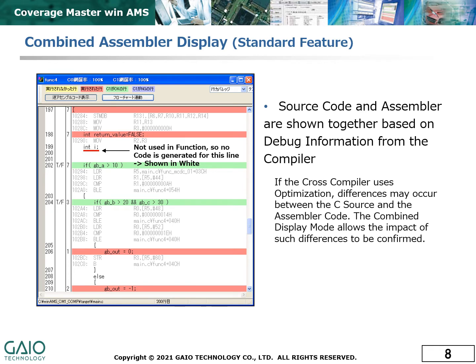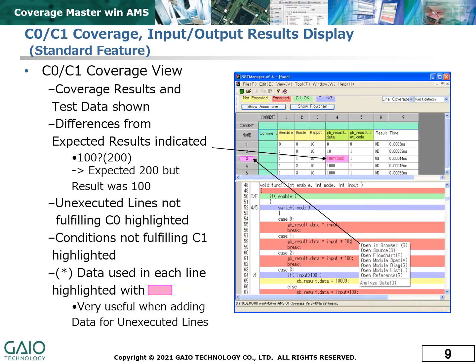The source code and the assembler code generated from it can be displayed together when verifying coverage measurement results, so that the impact of compiler optimization can be clearly seen. Test results are shown in an easy-to-understand way, with lines of code color-coded to show the state of coverage, and output that differs from expected results is highlighted.